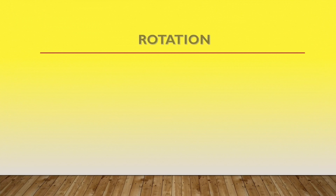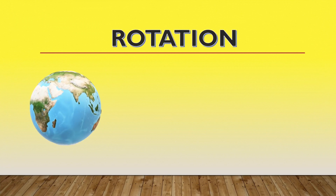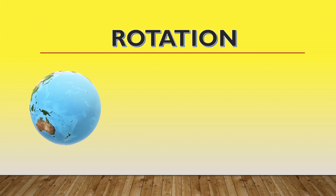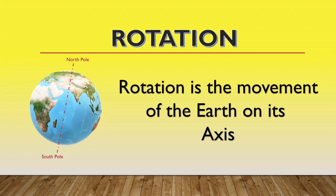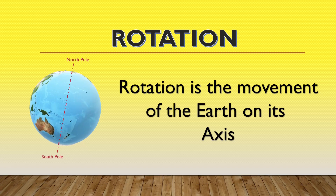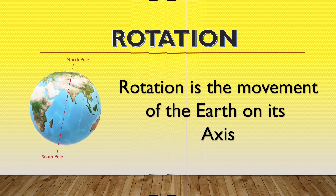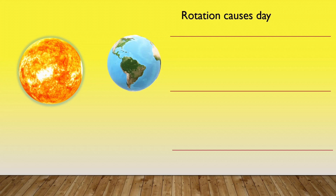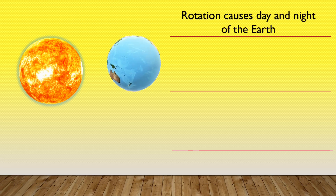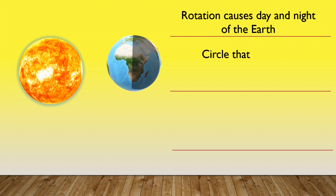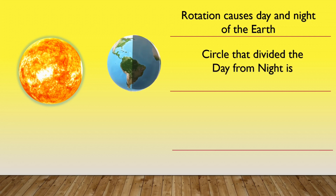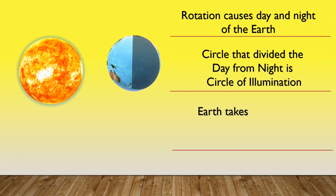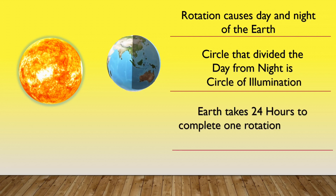What is Rotation? Rotation is the movement of the Earth on its axis. Rotation causes day and night of the Earth. The circle that divides the day and night is called the Circle of Illumination. Earth takes 24 hours to complete one rotation on its axis.